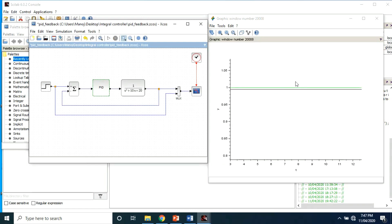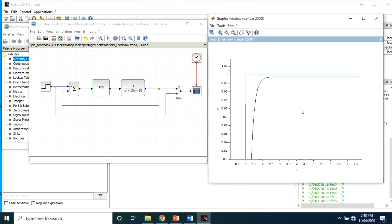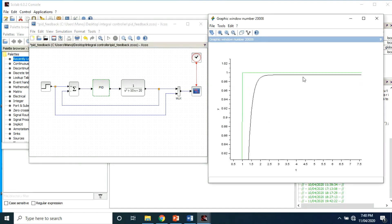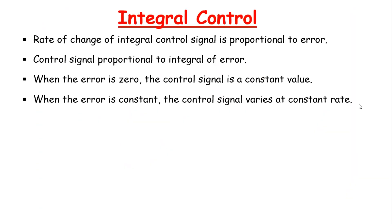The offset error of proportional mode occurs because the controller cannot adapt to changing external conditions — that is, changing load. In other words, the zero error output is a fixed value. The integral mode eliminates this problem by allowing the controller to adapt to changing external conditions by changing the zero error output.